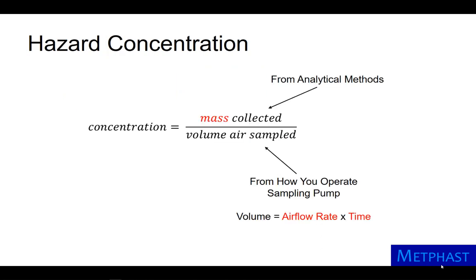The concentration of hazard is typically calculated as the mass of the hazard collected on the sampling media divided by the volume of air sampled. The mass collected is obtained from analytical methods, whereas the volume of air sampled is a function of how you operate the sampling pump.